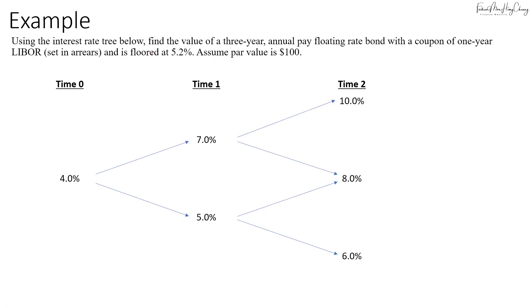Let's say we have the interest rate tree below and let's find the value of a three-year annual pay floating rate bond with a coupon of one-year LIBOR that is set in arrears and is floored at 5.2%. That means anything below 5.2% we will push it up back to 5.2%. Let's assume the par value is $100.